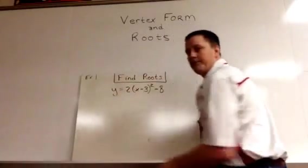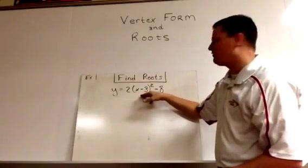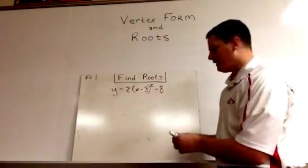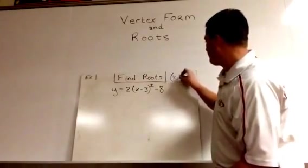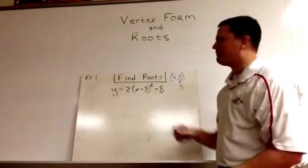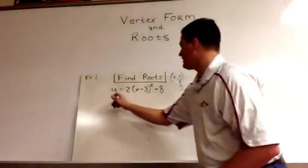Our first example looks like this: y equals 2 times the difference of x and 3 squared minus 8. So what we're going to do is since we want to find roots, roots are always x, 0, so we're going to take 0 and put it in for y. That will give us a problem that looks like this.